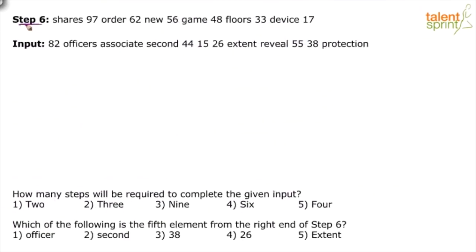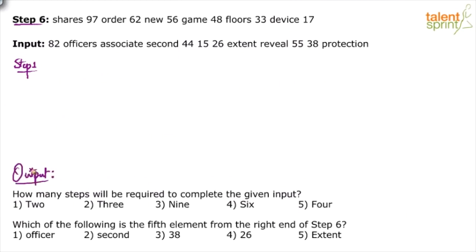Now the same process has to be followed for the given input. I have kept step six from the previous illustration as a reference. The new input is: '82 officers associate second 44 15 26 extent reveal 55 38 and protection.' It is preferred that you write the desired output first before starting step one — it makes the process easier.